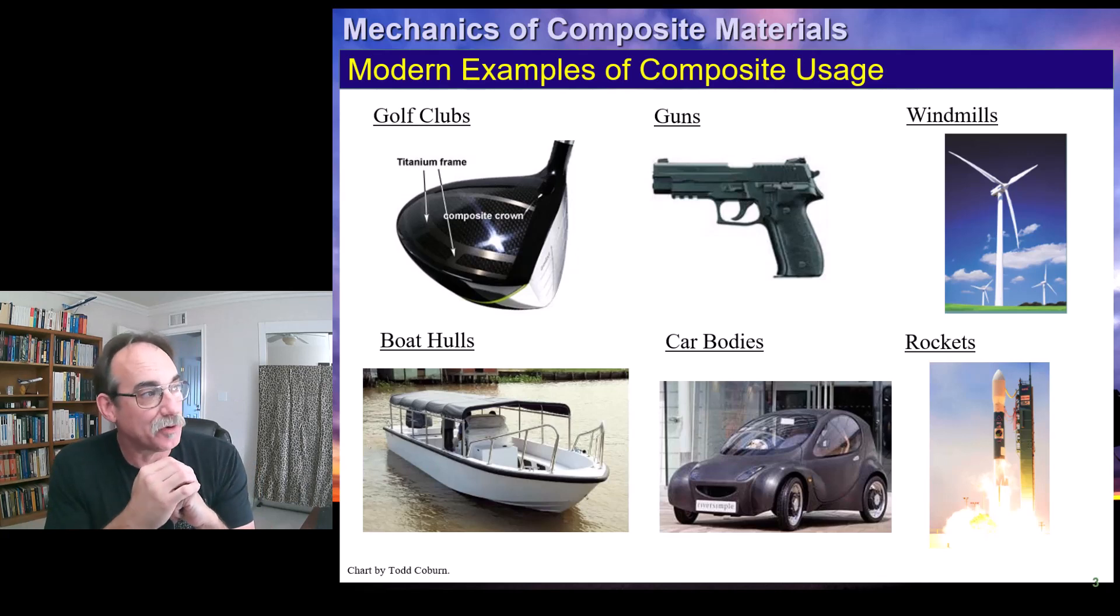So we can see some modern examples would be golf clubs, guns, windmills, boat hulls, car bodies, rockets, you name it. Things are being made from combinations of materials.